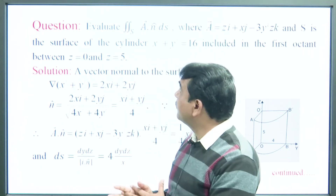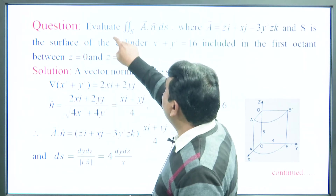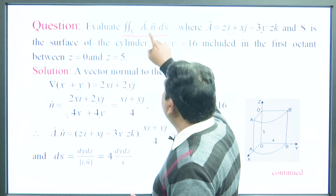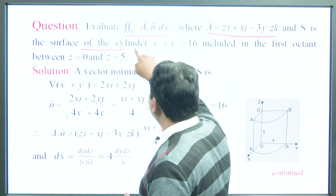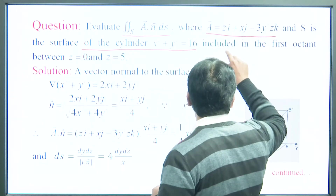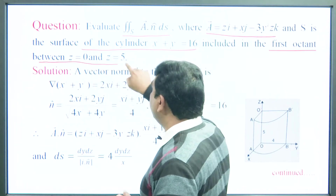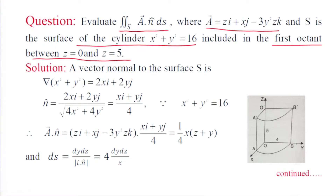Now we evaluate the integral of A dot N dS over S, where A is as defined and S is the surface of the cylinder x² + y² = 16 in the first octant between z = 0 and z = 5. We have to find the surface integral over the curved surface of this cylinder in the first octant.